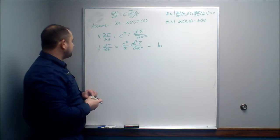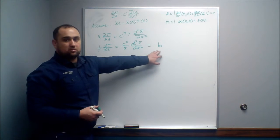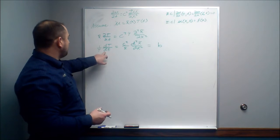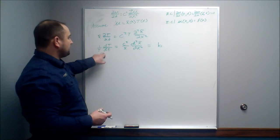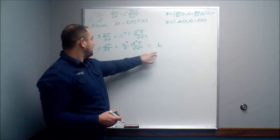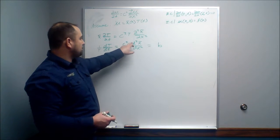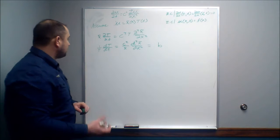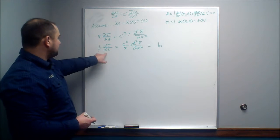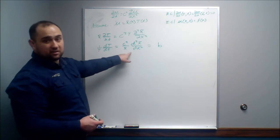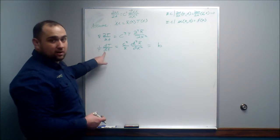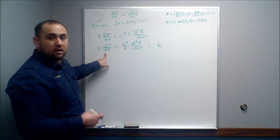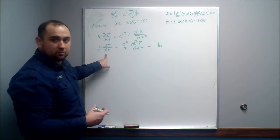Setting both sides equal to the constant b actually gives us two ordinary differential equations: (1/T)·(dT/dt) = b, and (c²/X)·(d²X/dx²) = b. The first equation is not dependent on x, which is why we can use an ordinary derivative rather than a partial derivative.